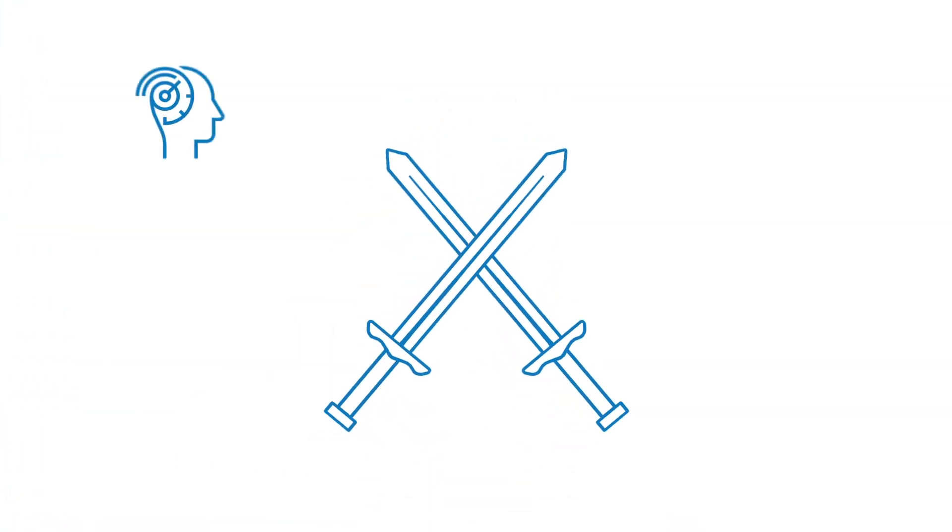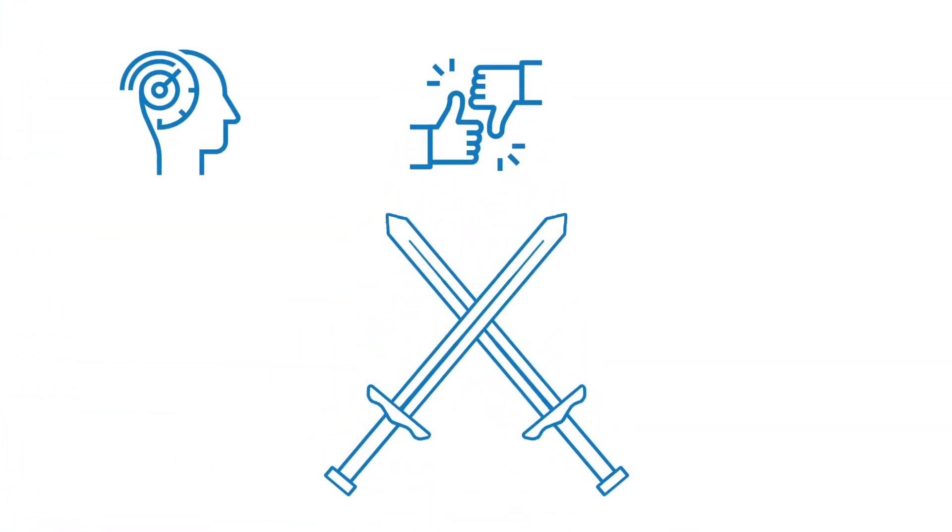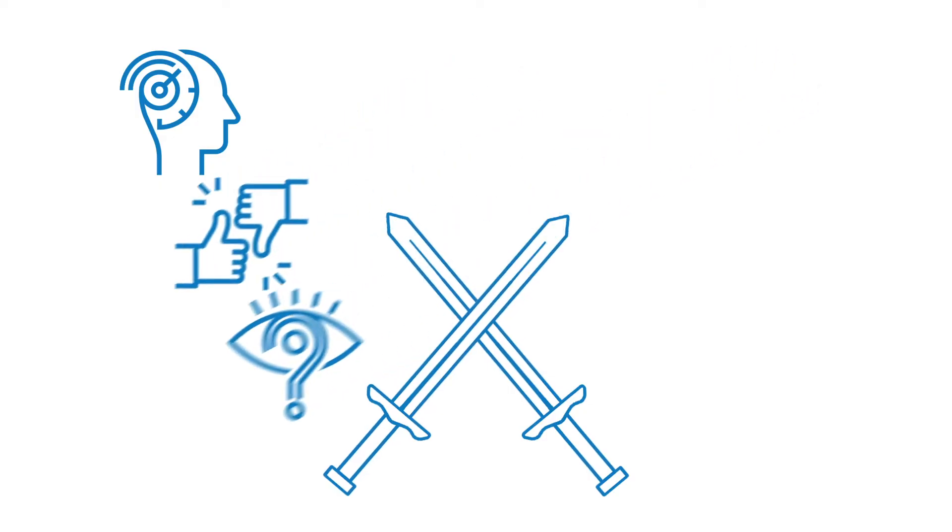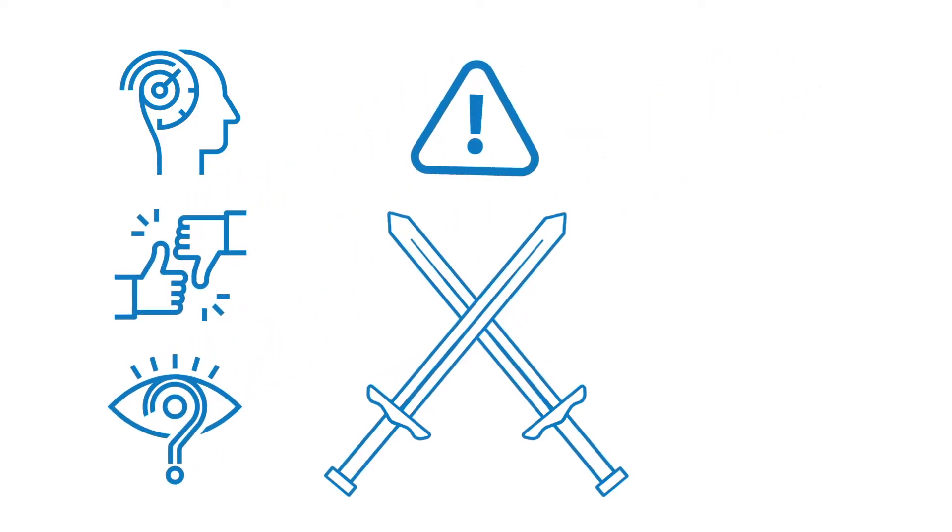Conflict is natural. Different personalities, communication styles, or a lack of appreciation of different perspectives can all result in tension. If not managed properly, this can cause disruptive behaviors and lead to potentially preventable issues.